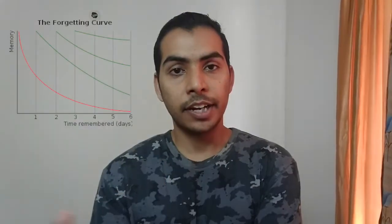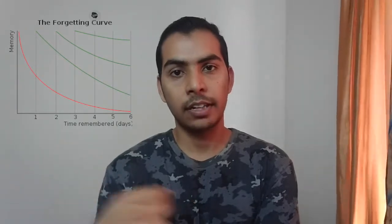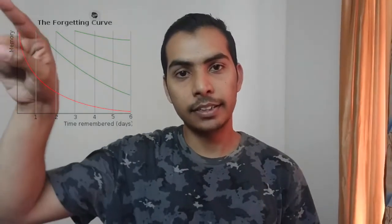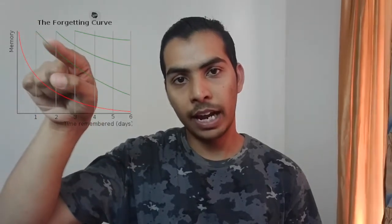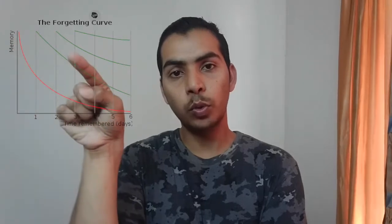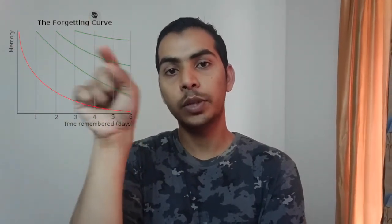There was this guy Herman Ebbinghaus. In 1885 he did a study on himself and found out that our memory or retention capacity decreases at an exponential rate. He created this forgetting curve, in which you can clearly see that our retention keeps on declining as time passes by. So you have to actively reimpose whatever you have learned in the past to keep that knowledge longer in your memory.